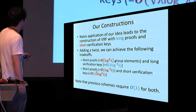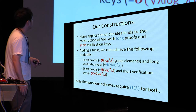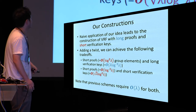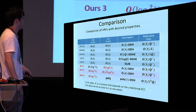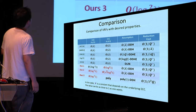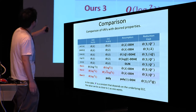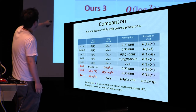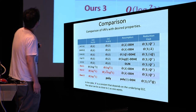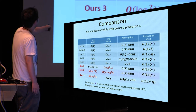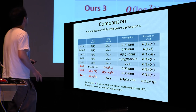Previous schemes require order of lambda group elements for both verification keys and proof sizes. In comparison, we can achieve the shortest proof size (Pi represents the proof), or the shortest verification key size, or a trade-off between them.